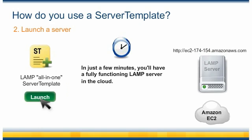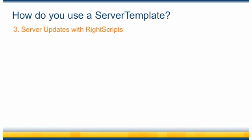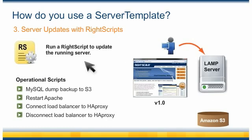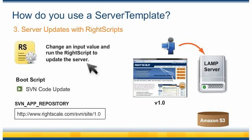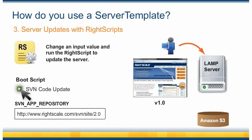And in just a few minutes, you'll have a fully functioning LAMP server in the cloud. Now let's see how we can make updates to our running server using the server template's RightScripts. In this case, let's run an operational script to create a dump of our database. You can also change a particular input value of a RightScript and run the script to update the server. Let's say we're updating our website to the latest software release — all we have to do is change the URL of our SVN repository to point to the latest branch, and then run the RightScript on the running server.